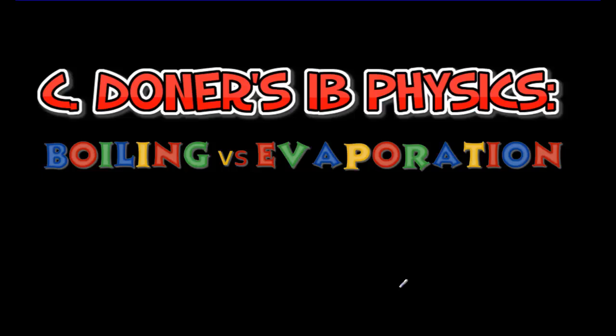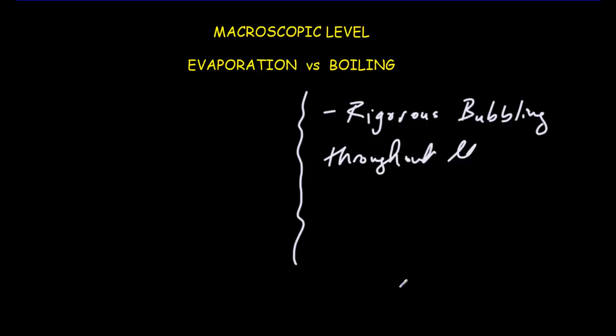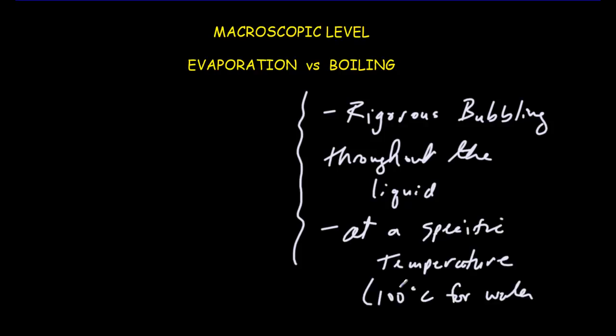Let's look at the difference between boiling and evaporation. So let's consider at the macroscopic or everyday level first of all, and the big thing you notice about boiling is that you get rigorous bubbling. That's what characterizes boiling, and it occurs throughout the liquid. And it also occurs at a specific temperature called the boiling point, which would be 100 degrees Celsius for water.